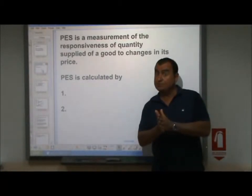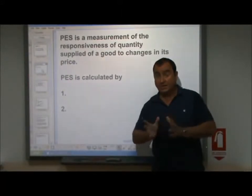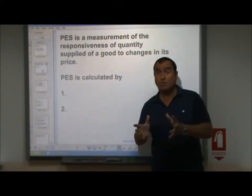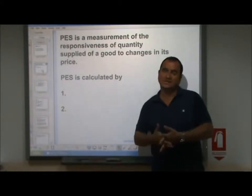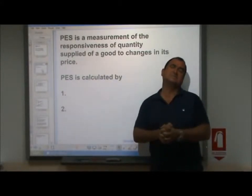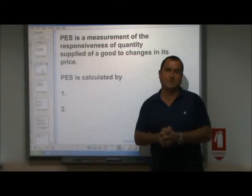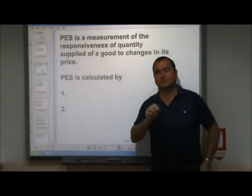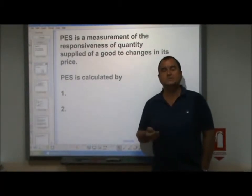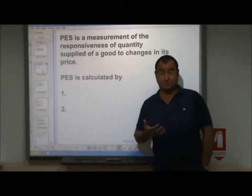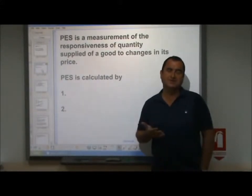If they cannot react quickly — if they can't quickly supply more when the price goes up, or quickly shut down supply when the price falls — we say they have inelastic supply. The good has inelastic supply. Of course, we can measure PES with equations, and the good news is that this always comes out positive.